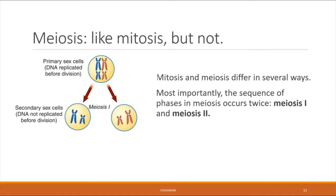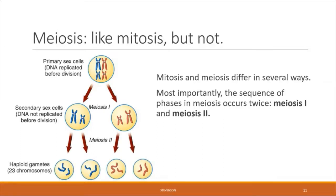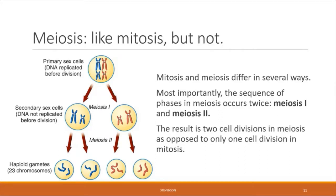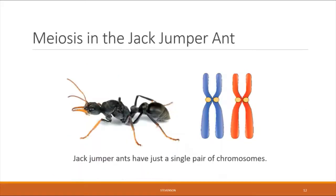There's one division called meiosis one, and a second division called meiosis two. The result is that instead of only producing two cells from a single division, meiosis yields four separate cells. We're going to walk through the steps of meiosis, focusing for simplicity on an organism that only has a single pair of chromosomes — the jack jumper ant, native to Australia.